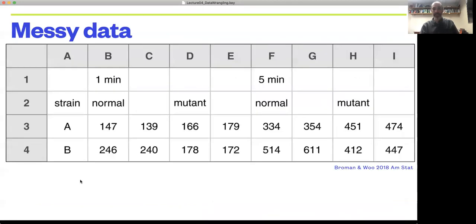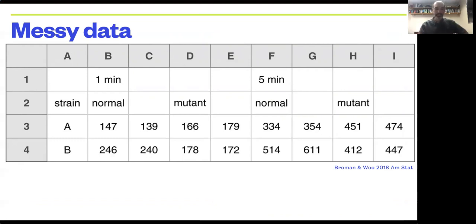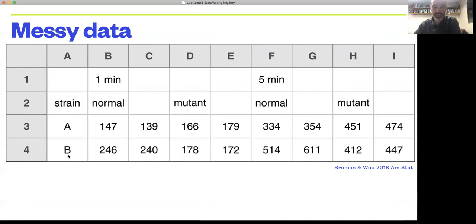So back to messy data. How do we make this tidy? In this example, which is also not an unusually unusual thing to see how data might be formatted, the first thing I would note is we have what appears to be a time variable now going across a row, so we violated that idea that we want variables to be in columns.